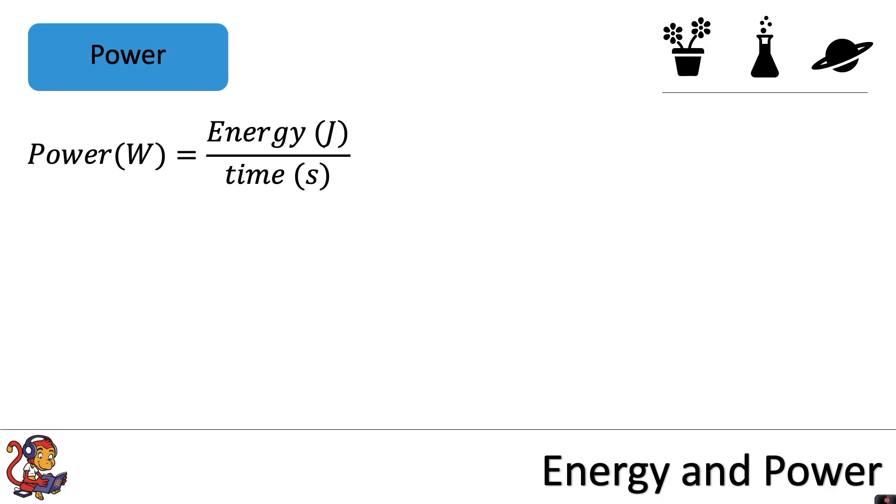Power is the energy transferred by the appliance in a certain amount of time. This can be represented by the equation power equals energy over time, where power is measured in watts, energy in joules, and time in seconds.